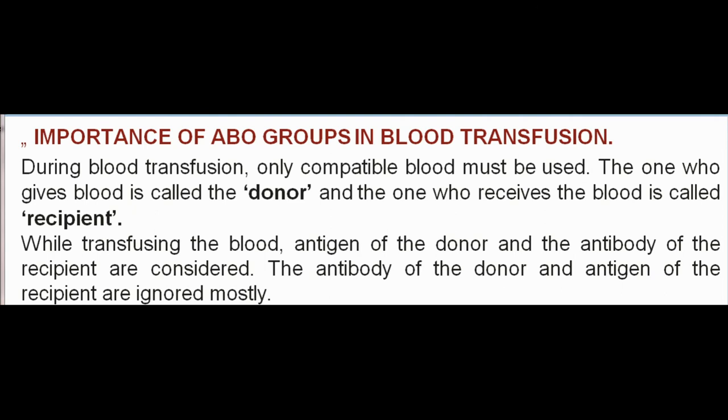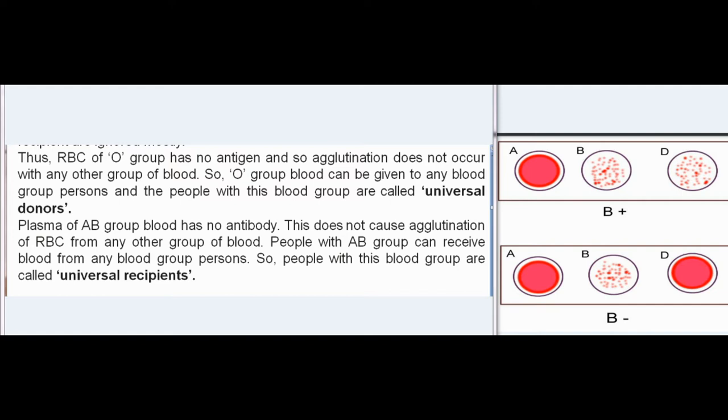Importance of ABO Groups in Blood Transfusion: During blood transfusion, only compatible blood must be used. The donor gives blood; the recipient receives it. The antigen of the donor and the antibody of the recipient are considered; the antibody of the donor and antigen of the recipient are mostly ignored. RBCs of O group have no antigens, so agglutination does not occur with any other blood group — O group can be given to anyone, making these individuals universal donors. AB group plasma has no antibodies, so AB group individuals can receive blood from any group — they are called universal recipients.